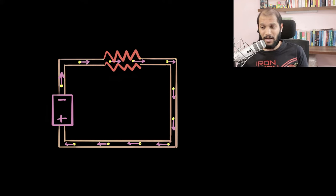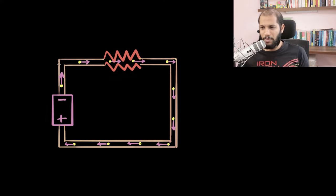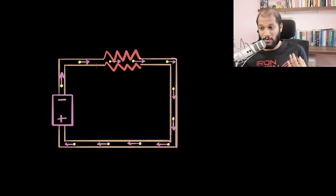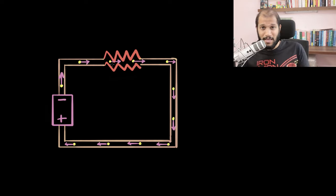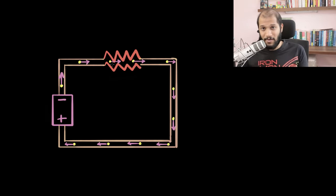So all the electrons are experiencing exactly the same force to begin with, and the current has not yet started. My question to you would be: what would be the consequence of this? Think about the current in the wire where there is no resistance, and the current in the resistor where there is high resistance. Do you think the current is going to be the same, or more somewhere and less somewhere? Can you pause and think about that?